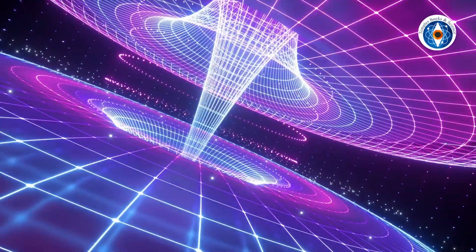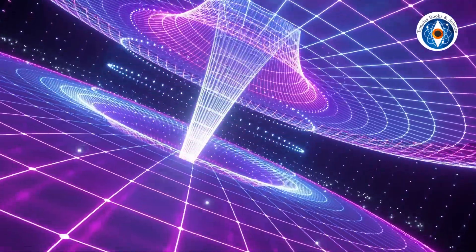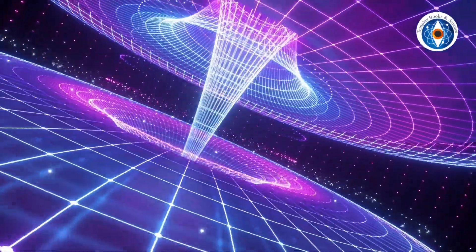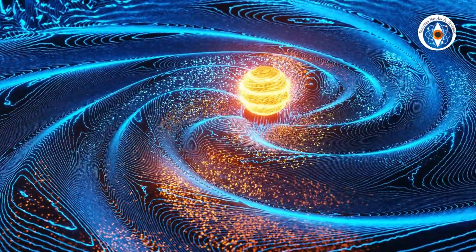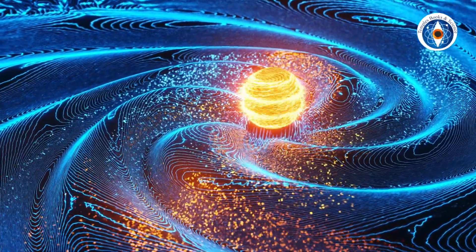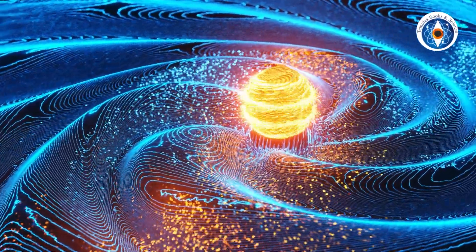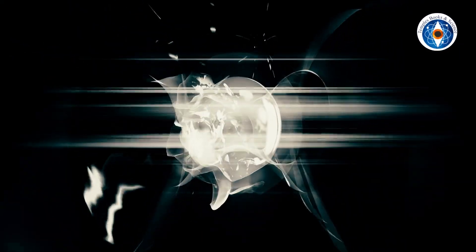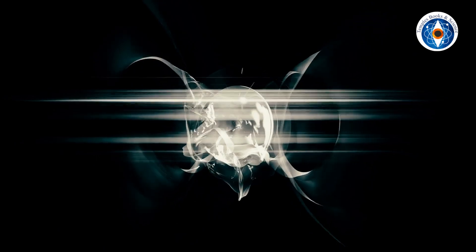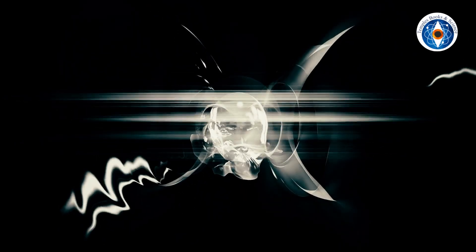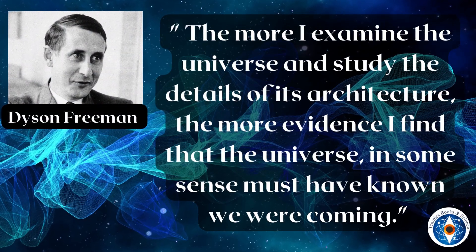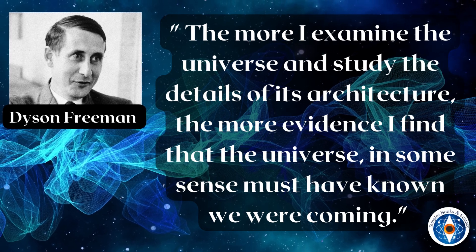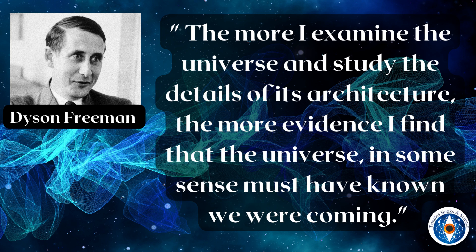Another amazing thing about our universe is that it is perfectly fine-tuned for us. If the Big Bang was stronger by 0.0001% or if gravity varied by a very small percentage, the universe would not exist. Every process in the universe is so fine-tuned for our existence that even if you vary any one of them by less than 1%, we would not exist. As the physicist Dyson Freeman put it, the more I examine the universe and study the details of its architecture, the more evidence I find that the universe in some sense must have known we were coming.